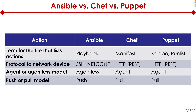This chart provides clarity on how all three tools compare. Looking at the master file: Ansible has a playbook, Chef has a recipe or run list, and Puppet has a manifest. The protocol required on the network device for Ansible is SSH and NetConf. For Chef and Puppet, they rely on HTTP, which means they're relying on northbound APIs.